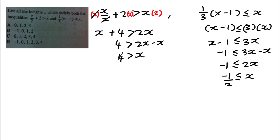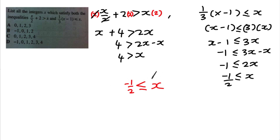Now I combine the two inequalities. Writing x in the middle, the smaller number −1/2 goes on the left. So x must be bigger than −1/2 and less than 4. Since the question wants integers only, we never take fractions. If you're not sure, you can draw a number line to help you understand.